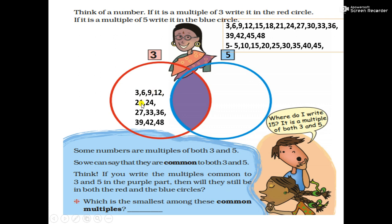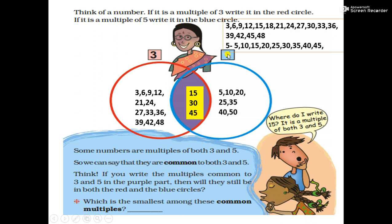The remaining multiples of 3 only — 3, 6, 9, 12, 21, 24, 27, 33, 36, 39, 42, 48 — are written in the red area. And 15, 30, 45 are the numbers which are multiples of both 3 and 5. We can divide 15 by 3 (3×5=15) and we can divide 15 by 5 (5×3=15). 3×10=30, 5×6=30. 3×15=45, 5×9=45. So 15, 30 and 45 are the common multiples of both 3 and 5.